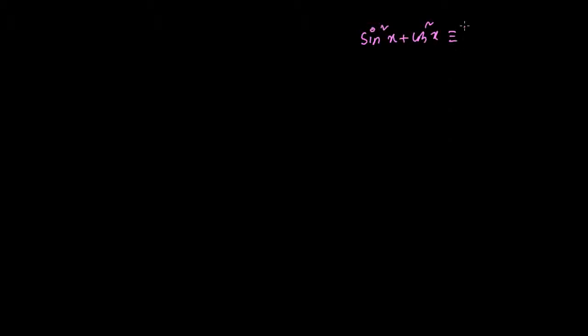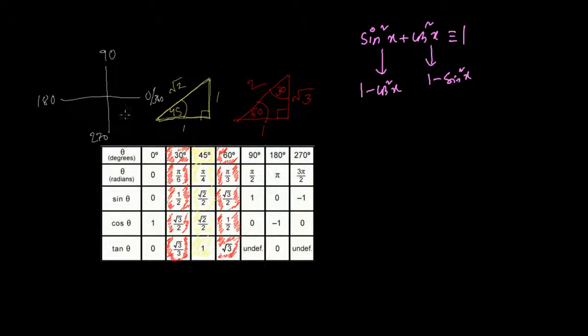There is one more type of question in C2 trigonometric solving that uses trigonometric identities. The fundamental identity is sin²x + cos²x ≡ 1 (the three lines mean 'identically equal to'). From this we can derive two more identities: sin²x = 1 − cos²x, and cos²x = 1 − sin²x. You can verify these using common angles.